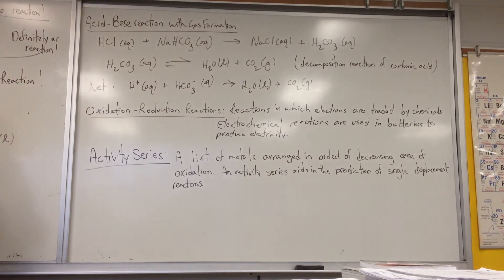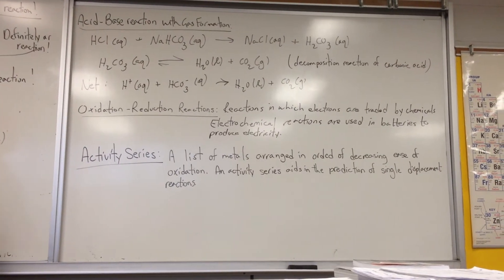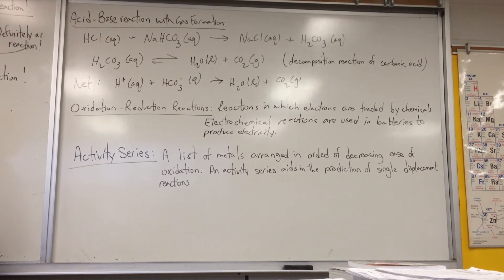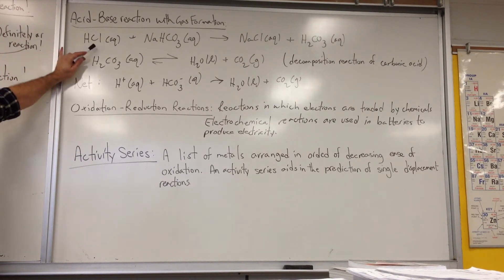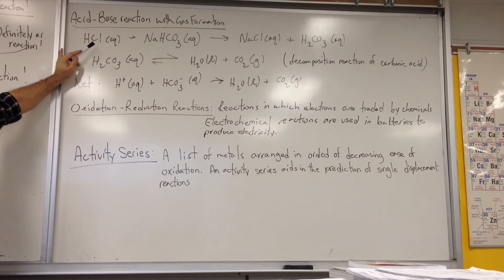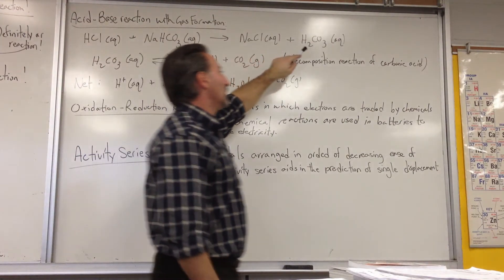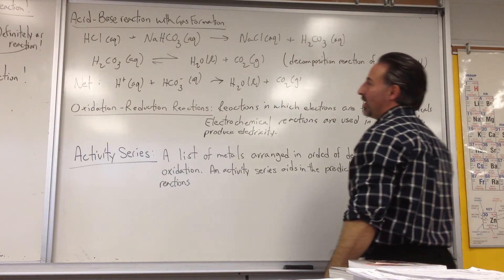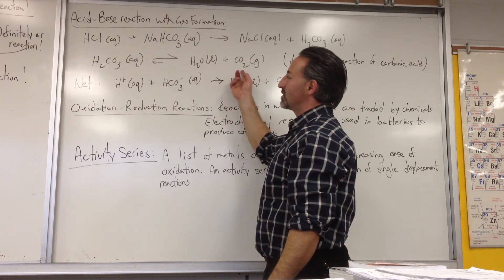And sometimes you'll get a reaction between an acid and a base that will result in the formation of gas. And the example of that would be the reaction of hydrochloric acid with sodium bicarbonate. The result is you get sodium chloride and carbonic acid. But carbonic acid is an unstable substance. It quickly breaks down into water and carbon dioxide.